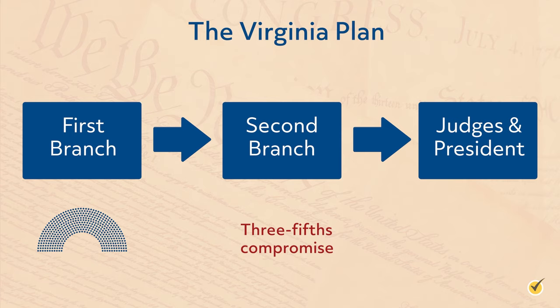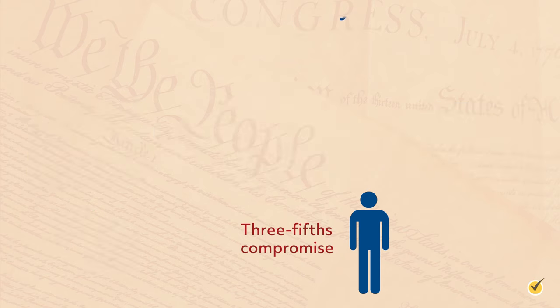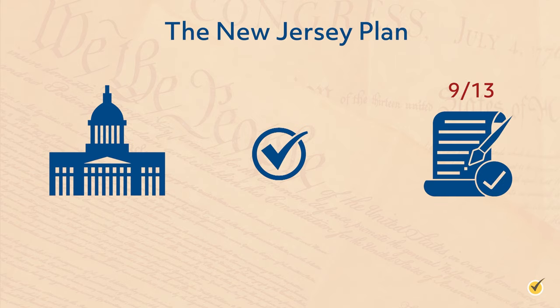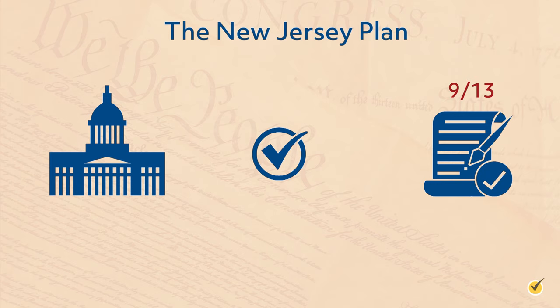The cost of Southern support was to count each slave as three-fifths of a person, meaning states with very large slave populations would gain many representatives. The smaller states countered the Virginia Plan with the New Jersey Plan, which looked to revise rather than replace the Articles of Confederation. The main points were to have a single legislative body and retain the per-state voting and the 9-of-13 states agreement for bills to pass. By July, little progress had been made and some delegates were threatening to dissolve the convention without passing a resolution.